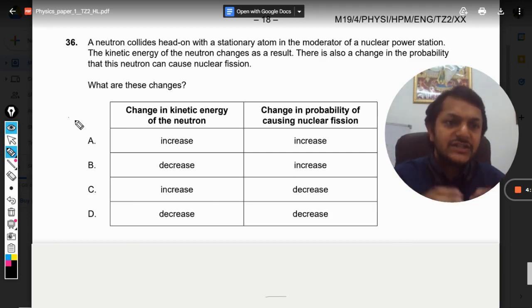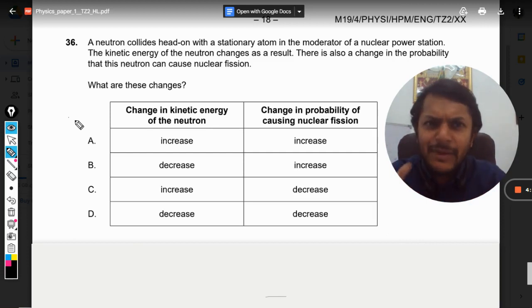What are these changes? So there is a theory and there is a little bit of practical background. I tell you what happens inside a nuclear power station. See we all know that uranium 235, the enriched uranium,